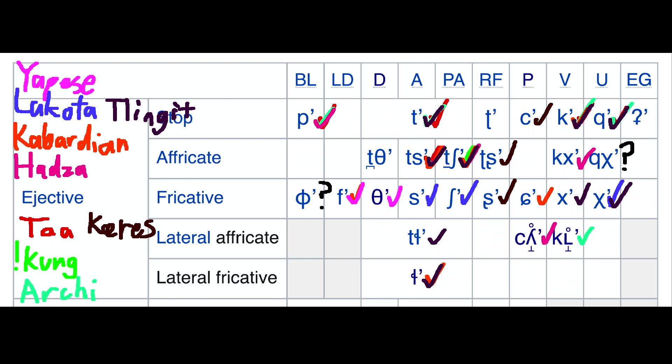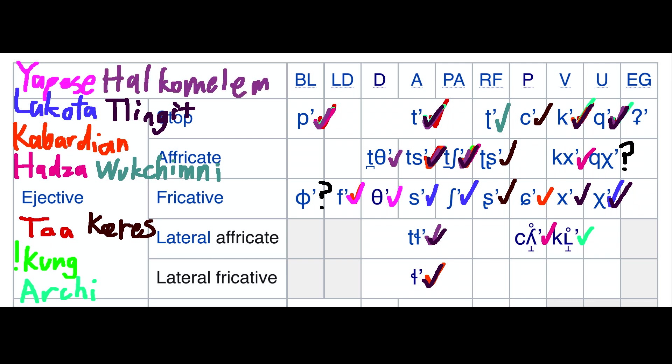Speaking of more Caucasus peoples, Kabardian covers the palatal ejective sibilant fricative and the alveolar ejective lateral fricative. Wukchumni covers the retroflex ejective stop, and Halkomelem covers the dental ejective affricate, while throwing in the voiced uvular trill. Dargwa has the epiglottal ejective stop. You may have noticed a pattern here: as I go on, I get less and less out of each language, and have to go further and further for individual sounds. I'll only be listing things of note from here on out.